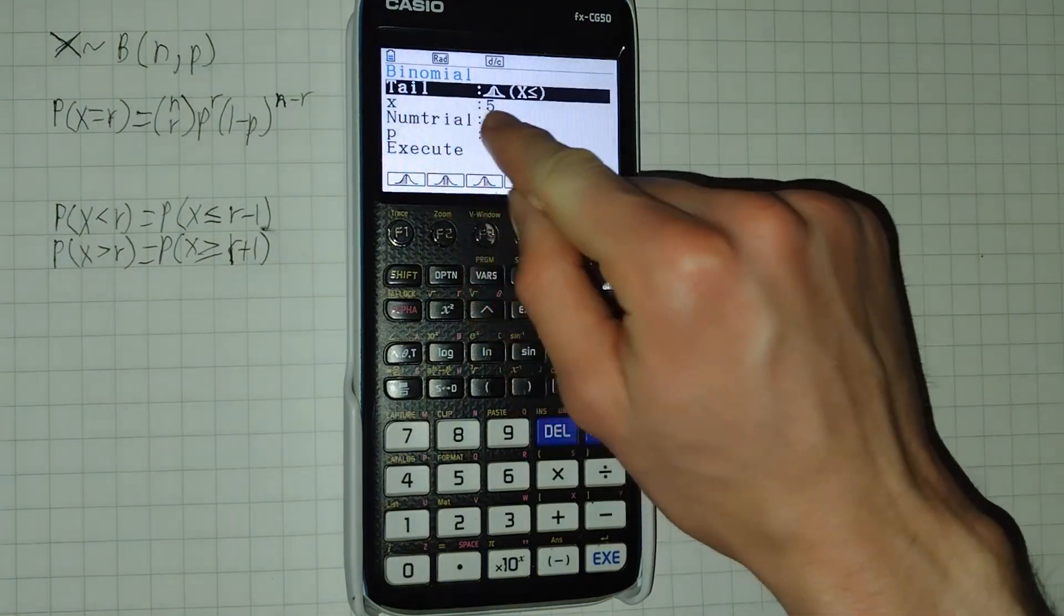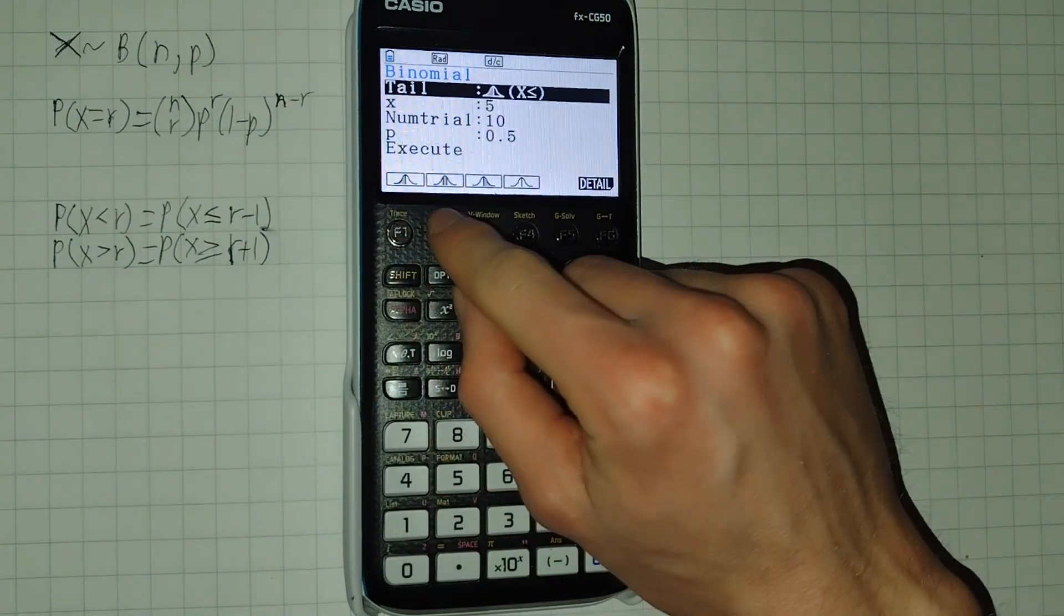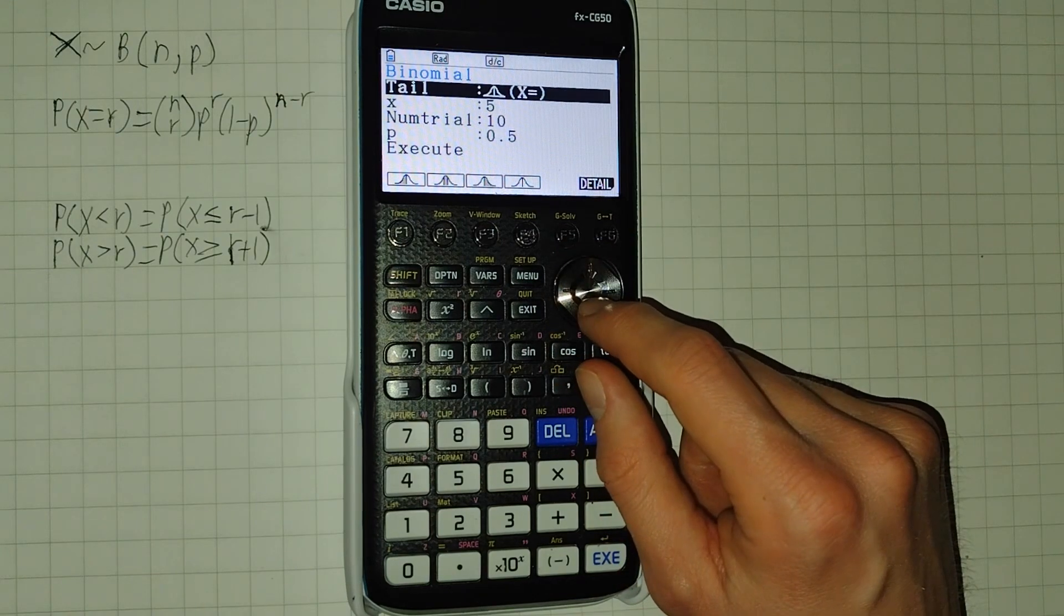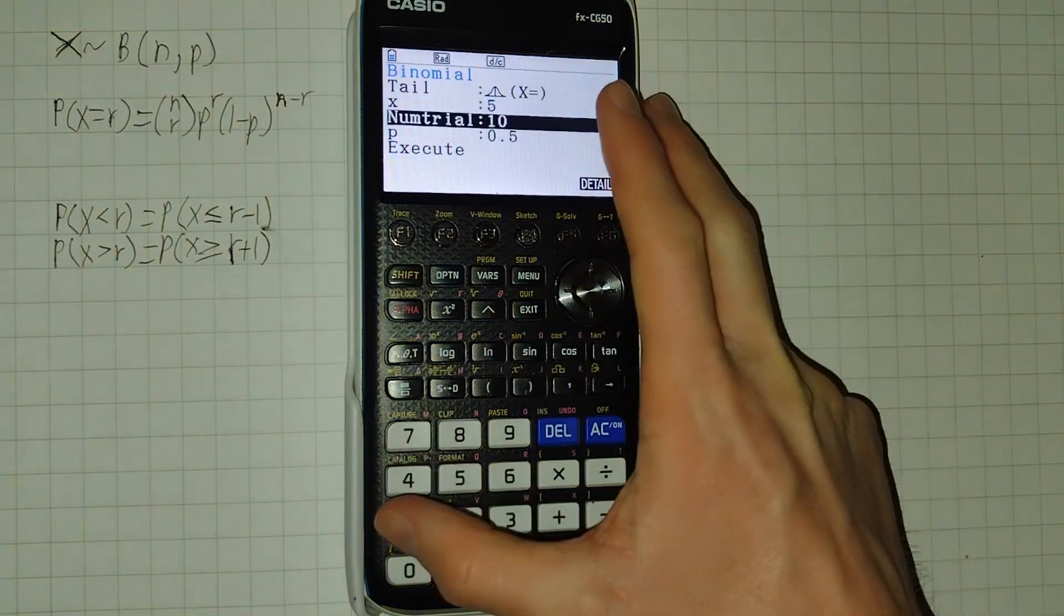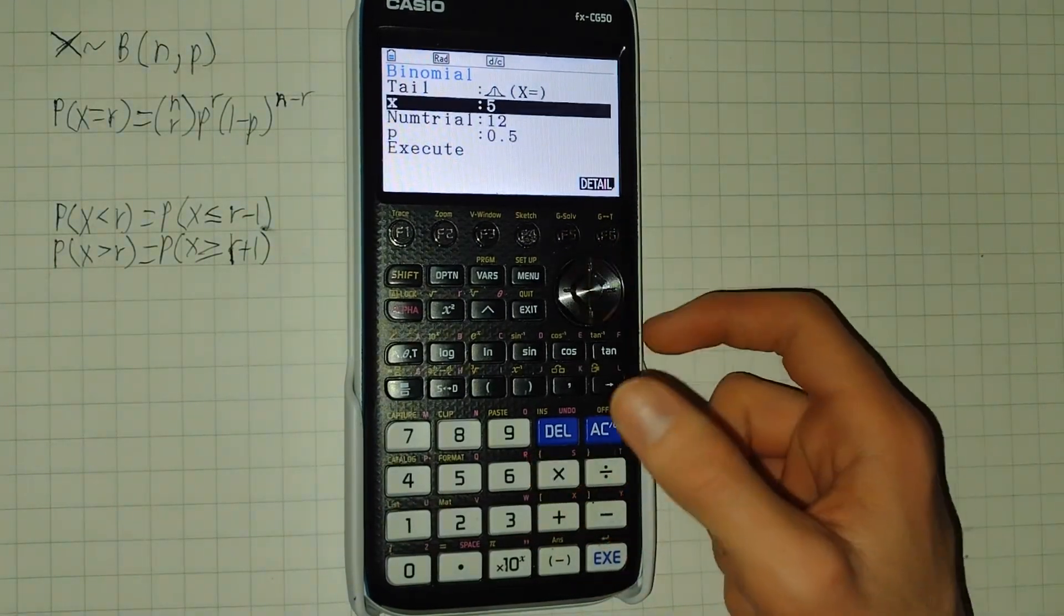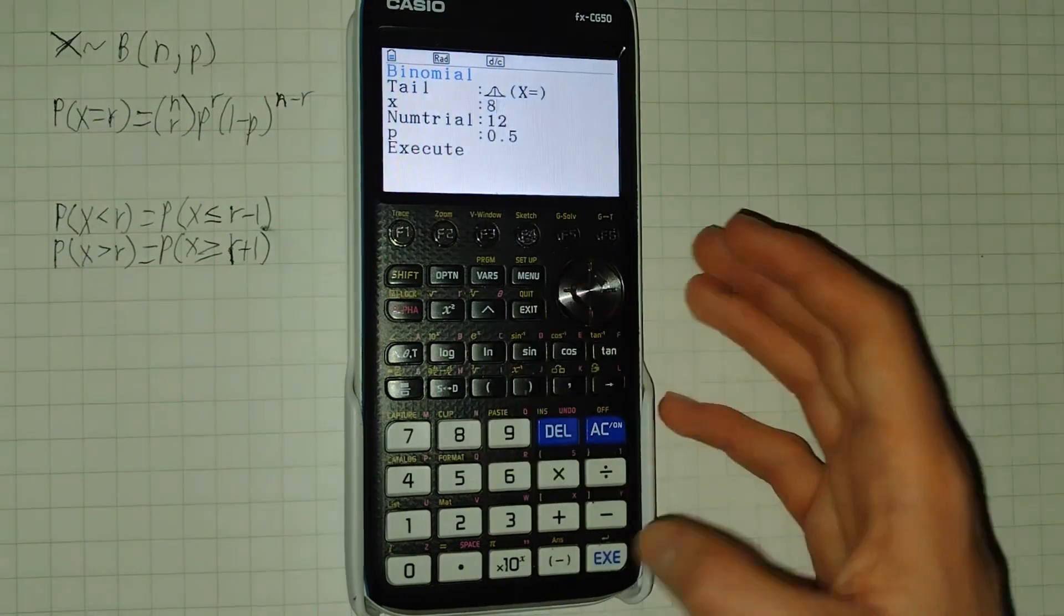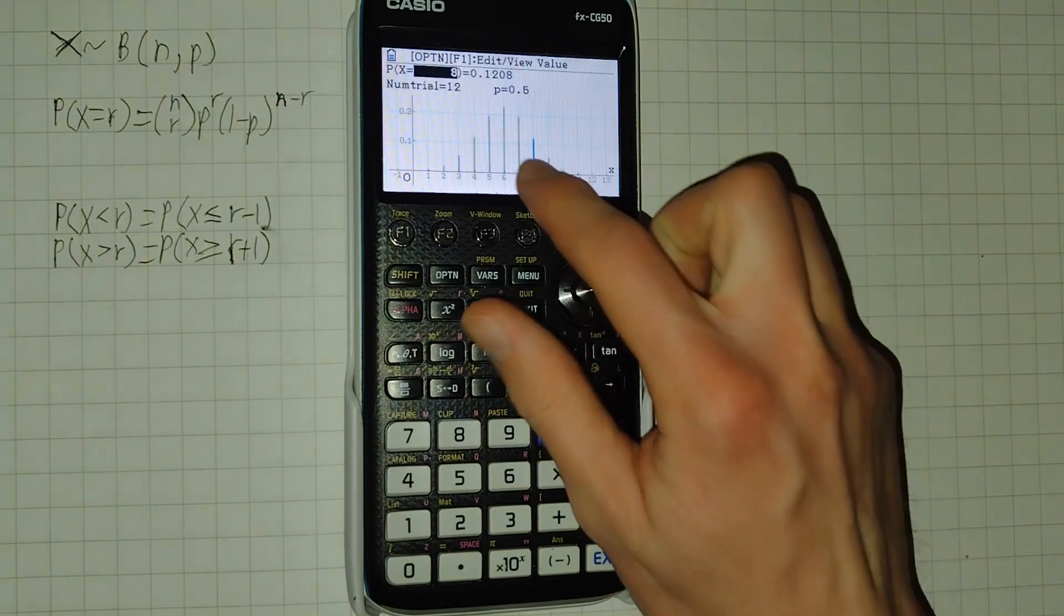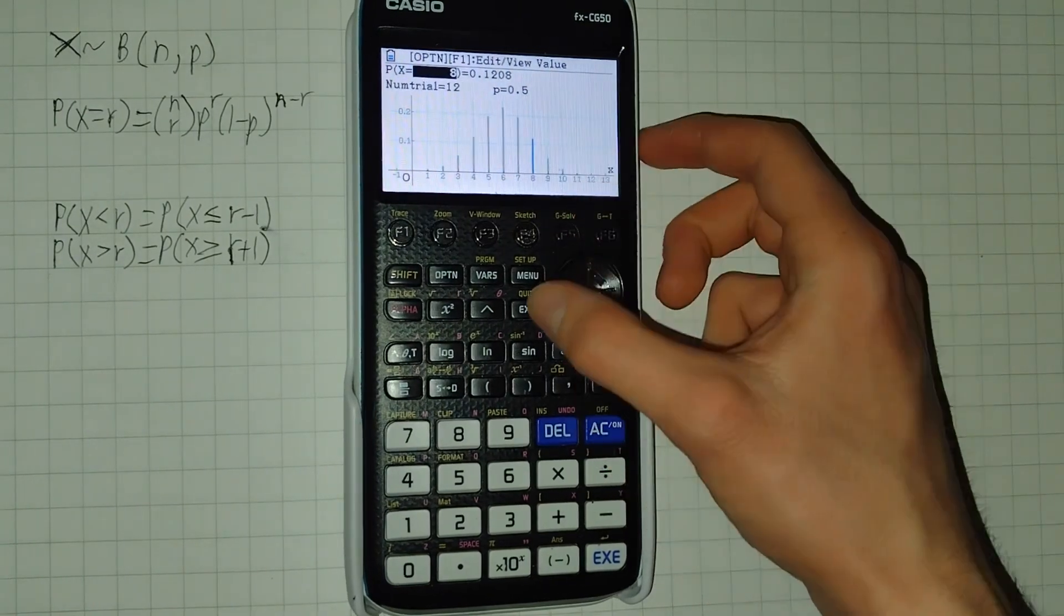So you can choose which bit of the distribution you want the probability of, so the left tail, some bit in the middle, the right tail, or just a specific value. So for example, returning to our coins example, if we're flipping the coin 12 times, and we want to find the probability of it being heads 8 times, if we put that in like that, and click execute, we get our probability. And it shows us visually where this is in the distribution.